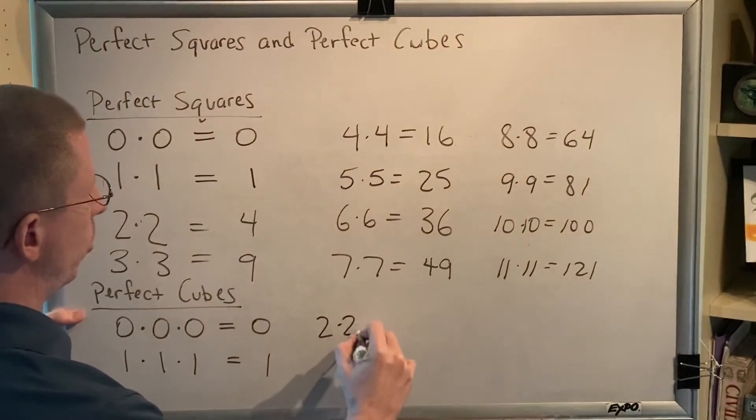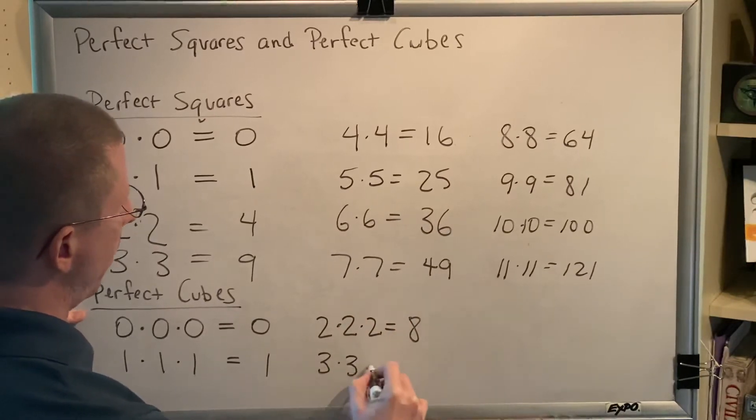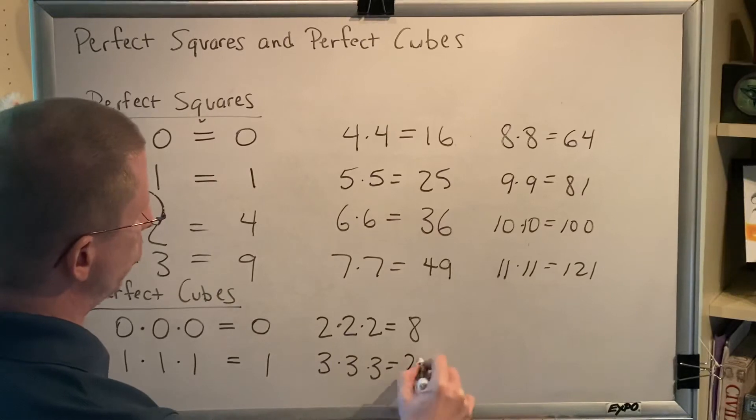Two times two times two equals eight. Three times three times three equals twenty-seven.